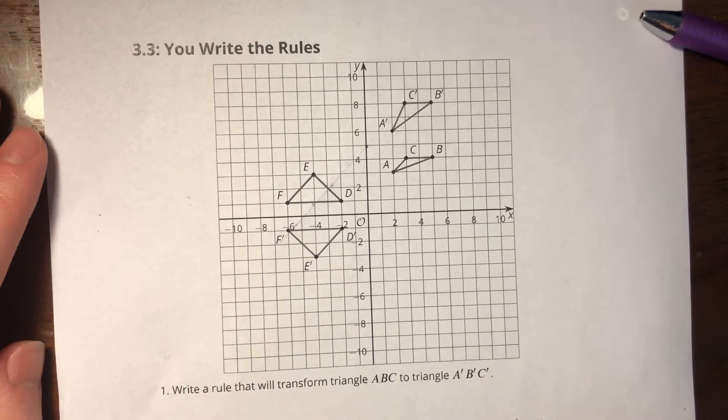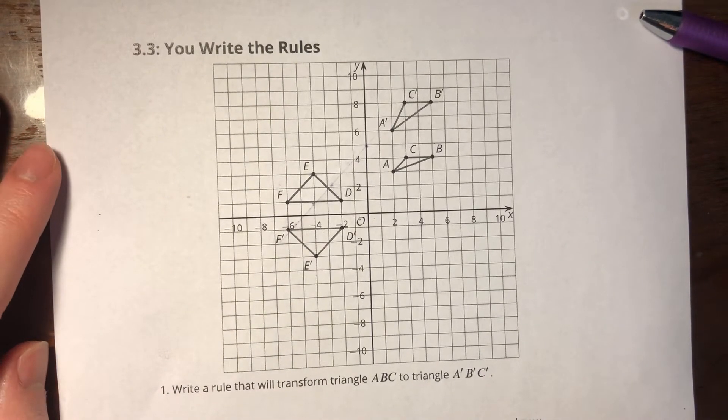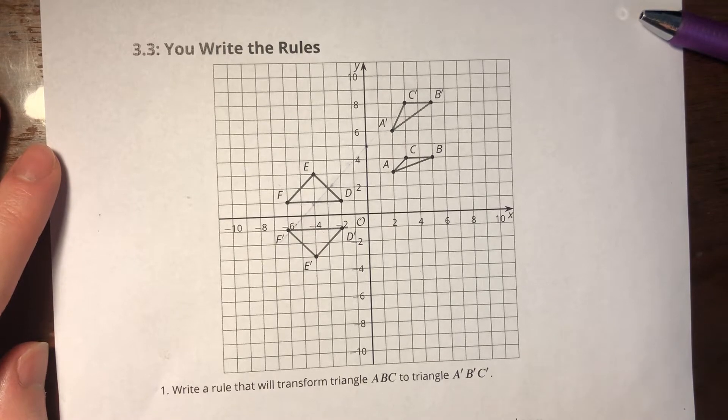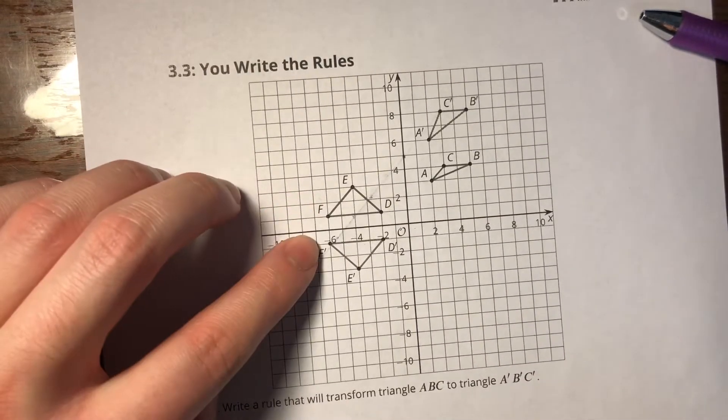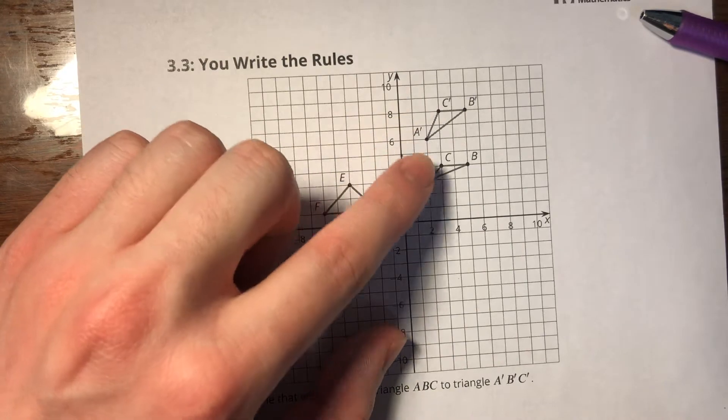Alright, 3.3, you write the rules. So we've got two sets of triangles. We've got a pre-image, an image, and another pre-image.